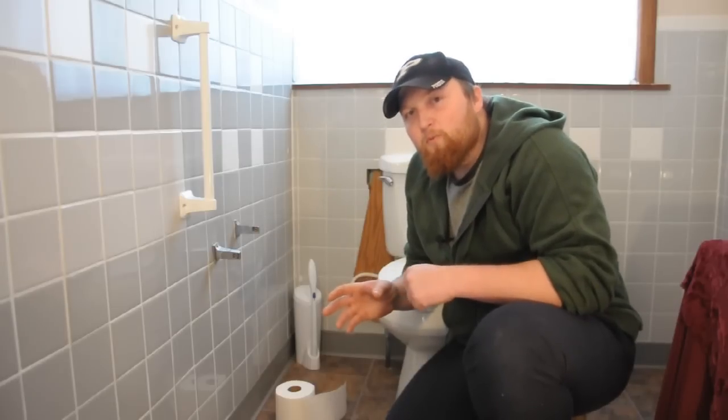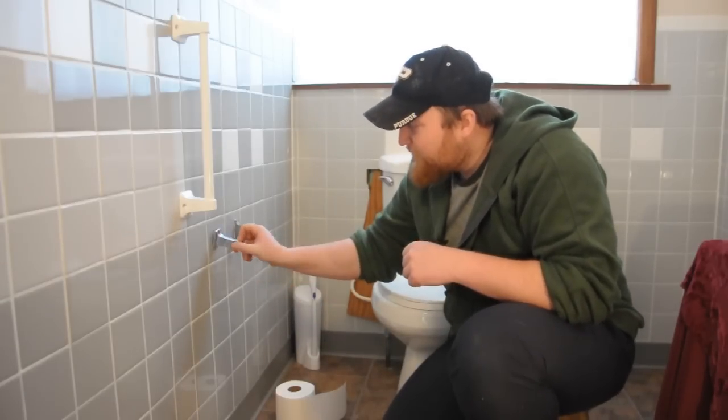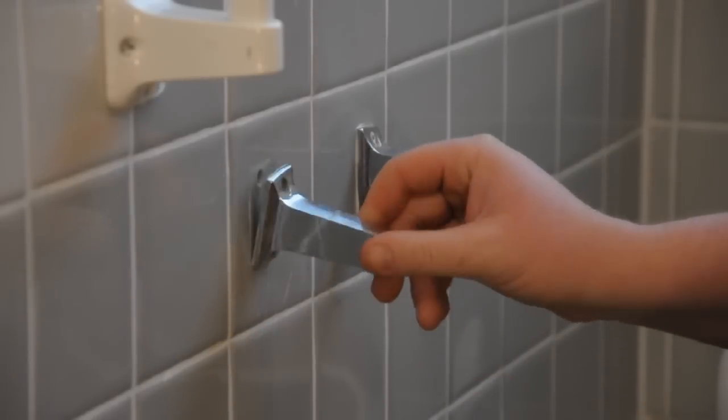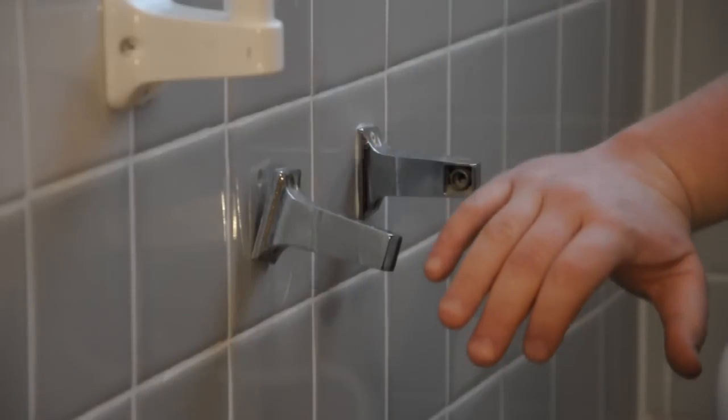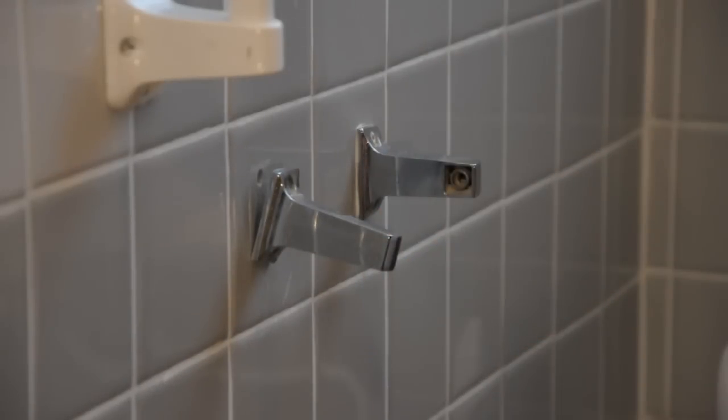One of the biggest problems with toilet paper holders is the screw pulls out. It doesn't do you any good. This could be a result of someone applying pressure to it and pulling the screw out, or having too short of a screw in there.